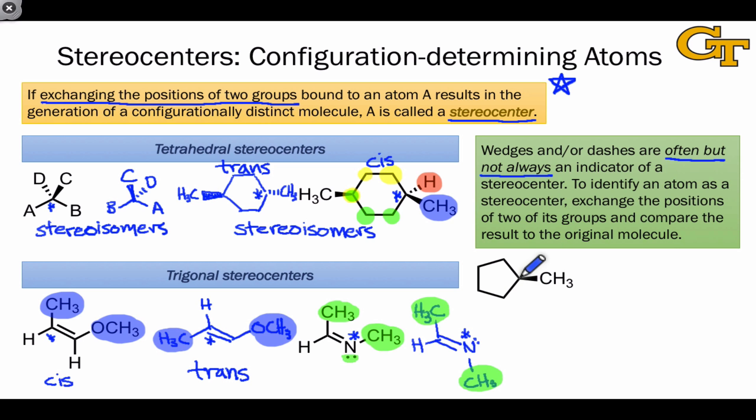Here's an example of a molecule in which one of the carbons bears a wedge and an implied hydrogen on a dash. Is this carbon a stereocenter? Well, let's exchange the positions of the hydrogen and the CH3 groups and see if the resulting molecule is the same as or different from the molecule that we started with.